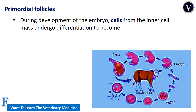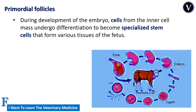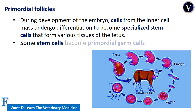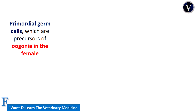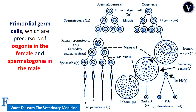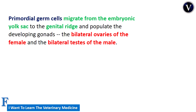During development of the embryo, cells from the inner cell mass undergo differentiation to become specialized stem cells that form various tissues of the fetus. Some stem cells become primordial germ cells, which are the precursors of oogonia in the female and spermatogonia in the male. Primordial germ cells migrate from the embryonic yolk sac to the genital ridge and populate the developing gonads — the bilateral ovaries of the female and the bilateral testes of the male.